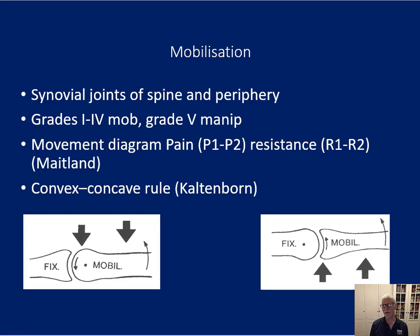Another way of representing movement is to use a movement diagram — in the same way that music is the notation of sound from a guitar, the movement diagram is the notation of what you're doing with your hands. We talk about where the resistance in the movement is: is it at the beginning or the end? And does pain occur at the beginning or the end of the movement? The onset of pain is P1, and P2 is the maximum pain end. The same applies to resistance — when does it start and where is the maximum resistance?